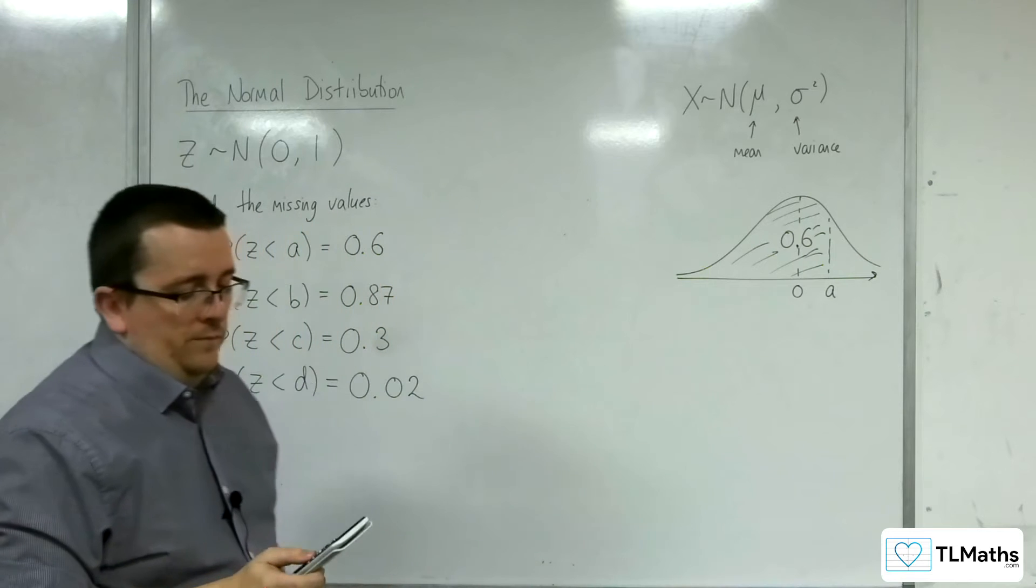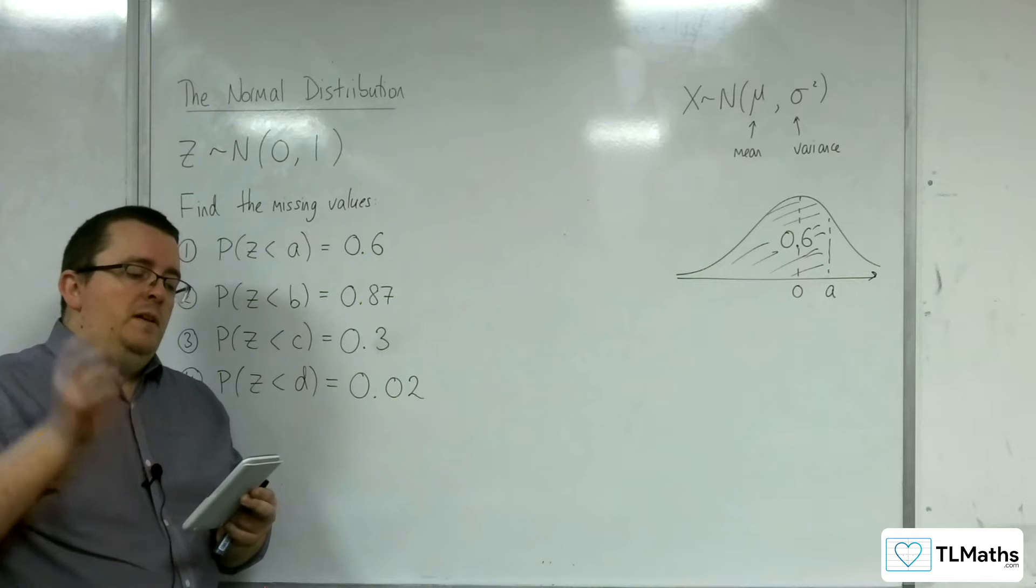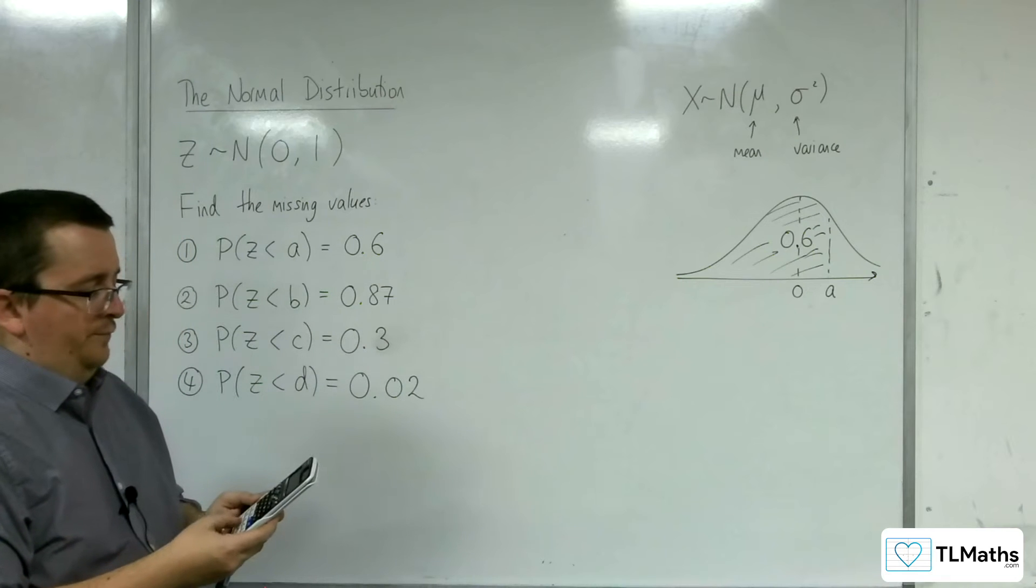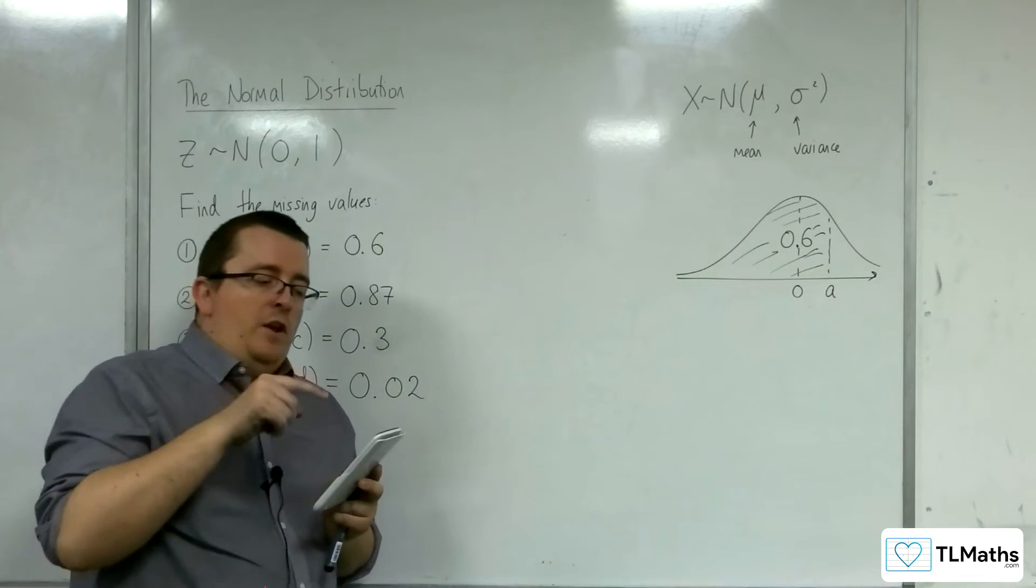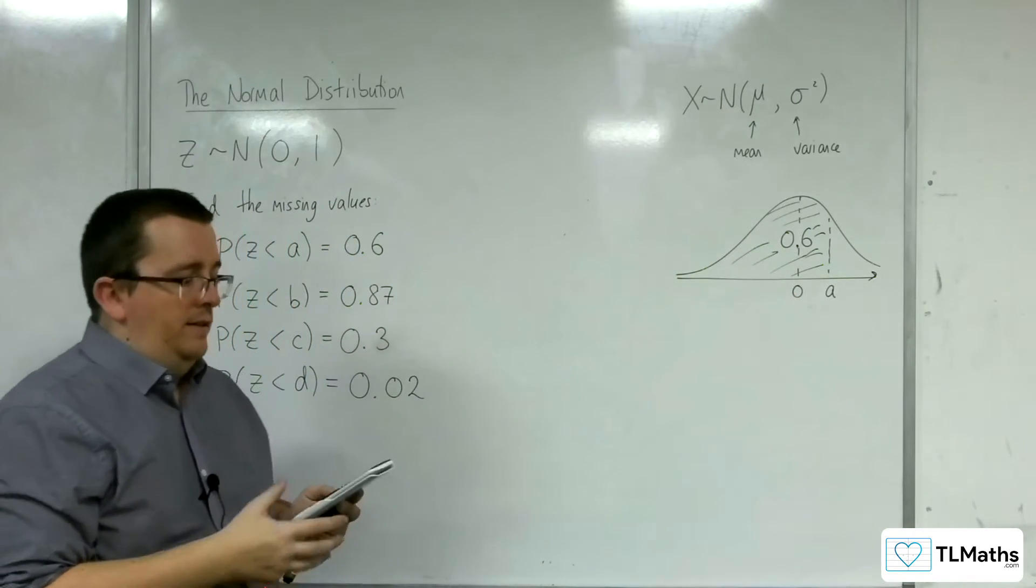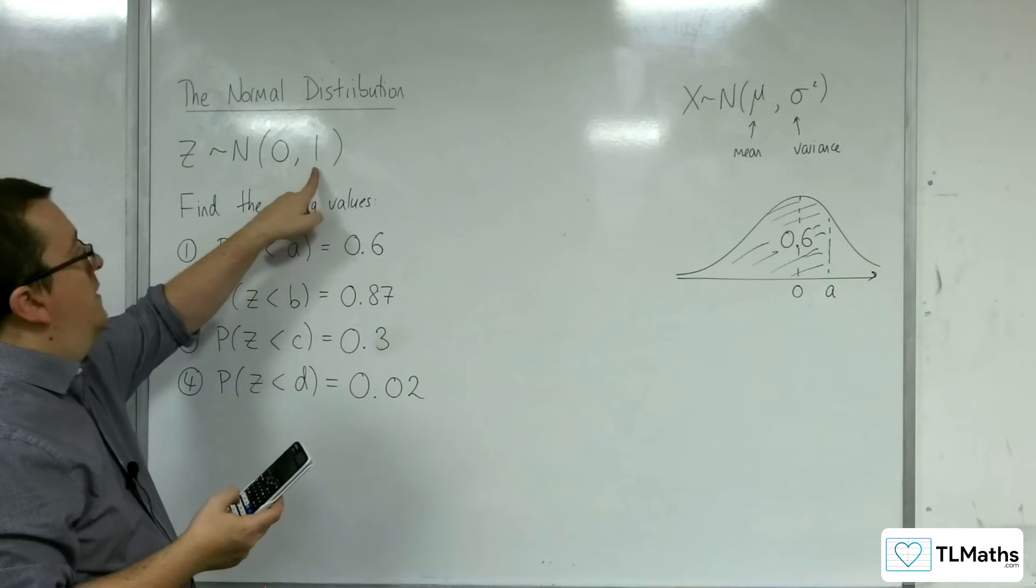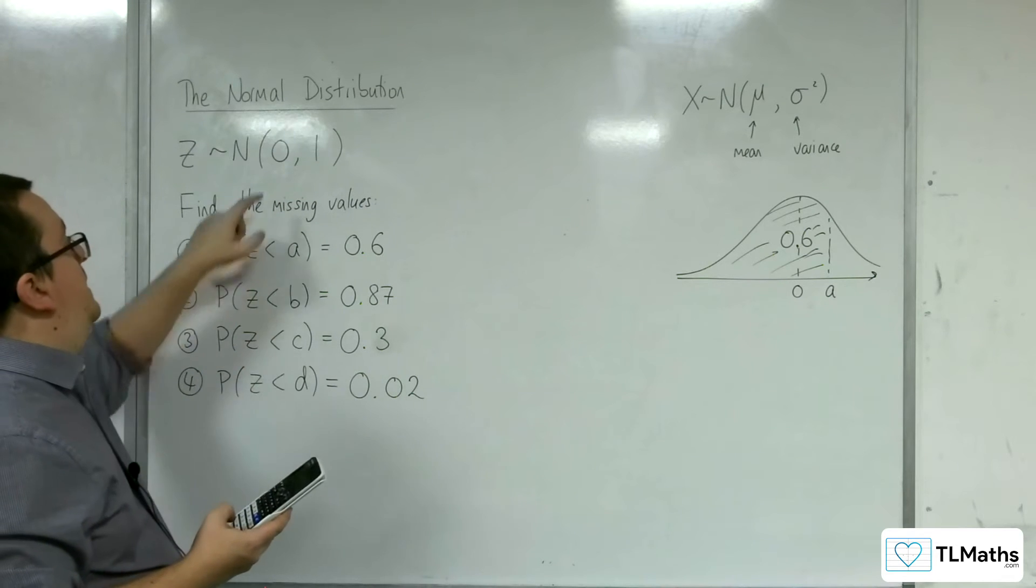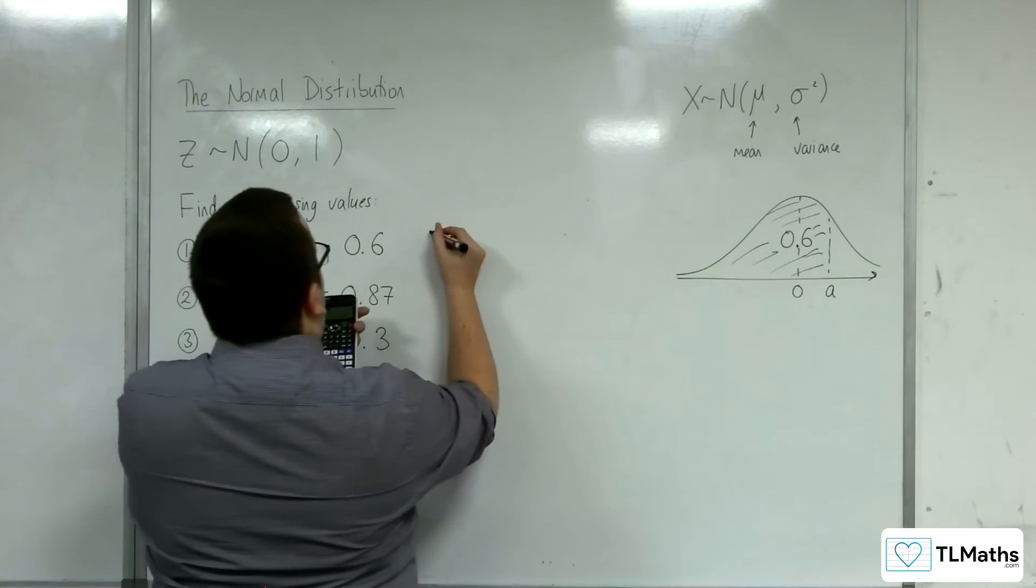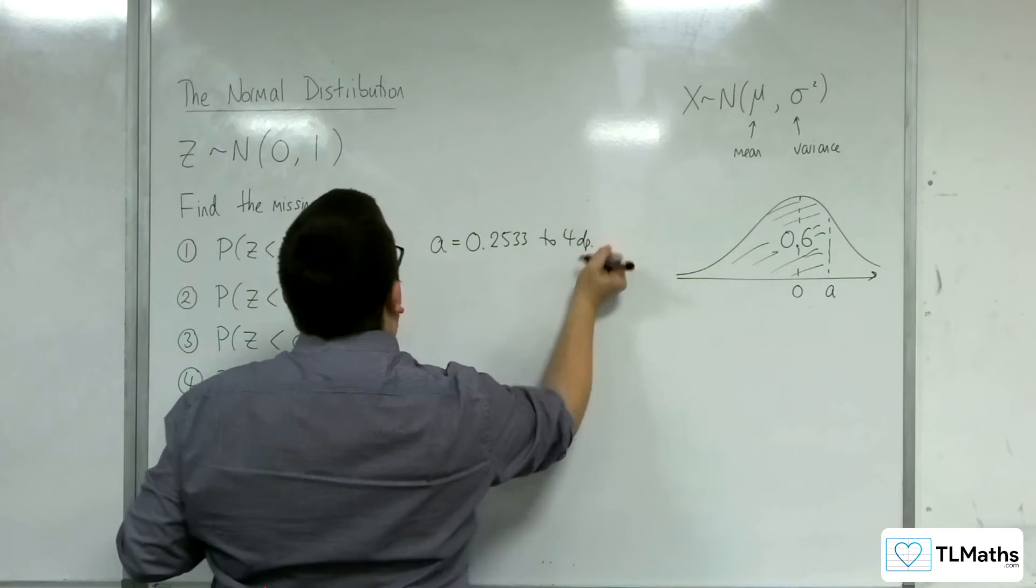On my calculator, what I do is I go to menu, and then I go to number 7 again, as I normally would. But this time, rather than going to number 2, you want to go to number 3, inverse normal. The area, the first option, is the probability that you have, that you've shaded, which is the 0.6. The sigma is 1, square root of 1, and the mean is 0. So press equals, and so a, you should get 0.2533 to 4 decimal places.